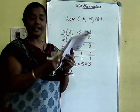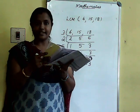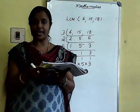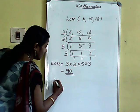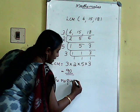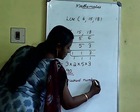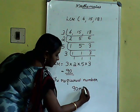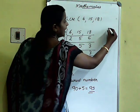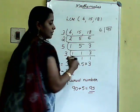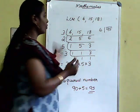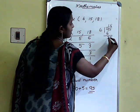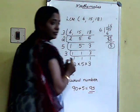The problem asks to find the least number that leaves remainder 5 when divided by 6, 15, and 18. The required number is LCM + remainder = 90 + 5 = 95. Check: 95 divided by 6 gives remainder 5. 95 divided by 15: 6 times 15 = 90, remainder 5. So 5 is the remainder in each case.